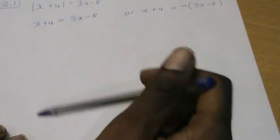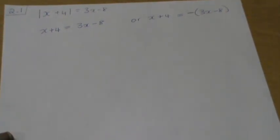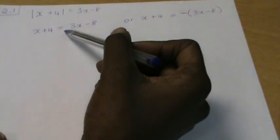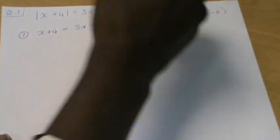And then we have two equations, we'd solve them, and then after we solve them, we must always check our solutions, because some of them might be invalid. So when I do this, I'm solving this equation, so I'll label them, this is number 1, this is number 2.